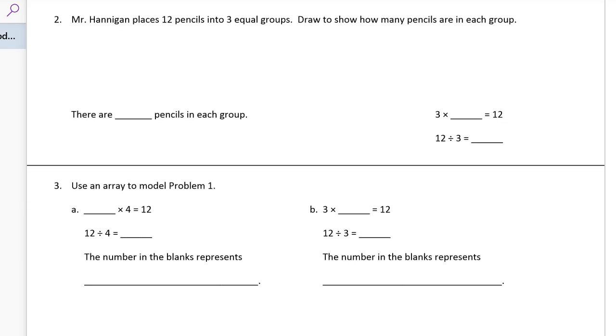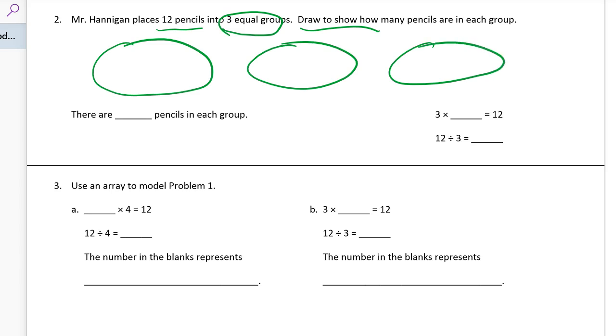Number 2, Mr. Hannigan again, he's placing 12 pencils into 3 equal groups. Draw to show how many pencils are in each group. So we've got 3 equal groups. We know there's 3 equal groups. I'm going to start with what we know. That's 3 equal groups. 3 groups. They're going to be equal. So to make them equal, I'm going to draw the 12 pencils one at a time.